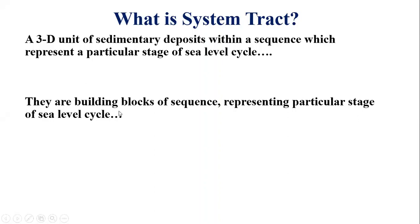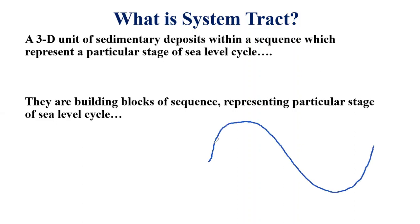System tracts are the building blocks of a sequence, which represent a particular stage of the sea level cycle. A sequence refers to a conformable succession of strata bounded above and below by a sequence boundary, or bounded by an unconformity and its correlative conformity. One sequence represents the deposition that occurred during one sea level cycle.